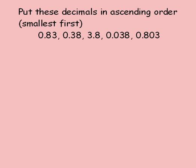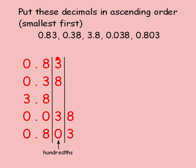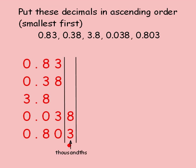Have a go at this tricky question now. You need to put the decimals in ascending order. This means that you need to start with the smallest one and finish with the largest one. Press pause and have a go. When you're ready for the answer, press play. To answer this question, the first thing that I do is write the numbers out so that the decimal points are all lined up. I can now clearly see the units, the tenths, the hundredths and the thousandths. Now I can put some extra zeros in so that all of the numbers have the same amount of digits.